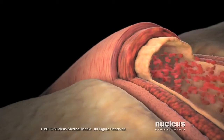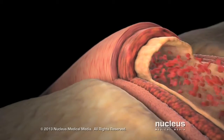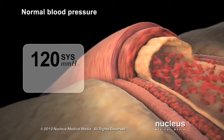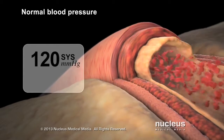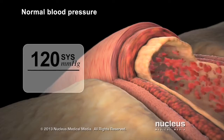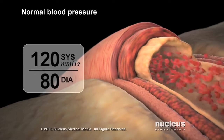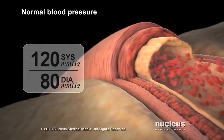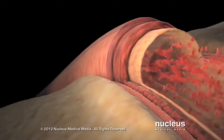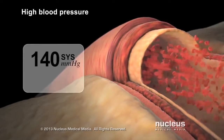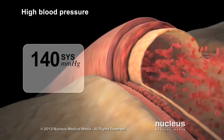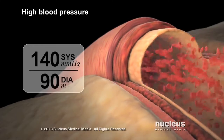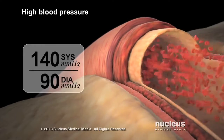While your blood pressure may change throughout the day, it should normally be less than 120 mmHg for systolic pressure and less than 80 mmHg for diastolic pressure. If your systolic pressure frequently stays above 140 or your diastolic pressure frequently stays above 90, you have high blood pressure.